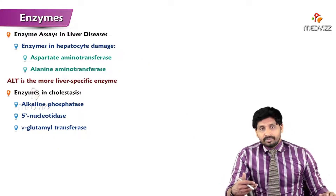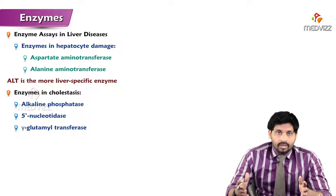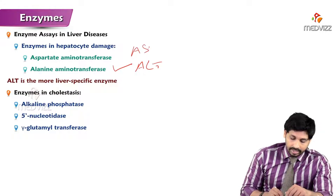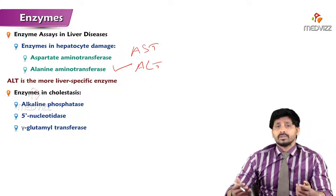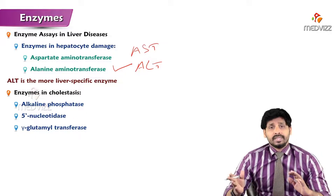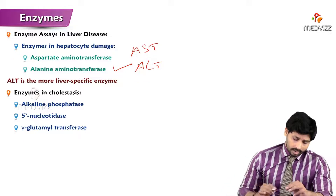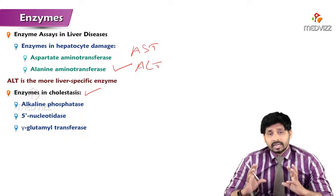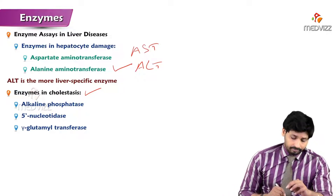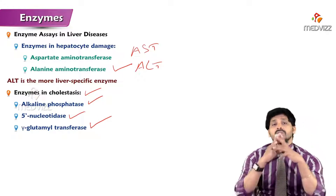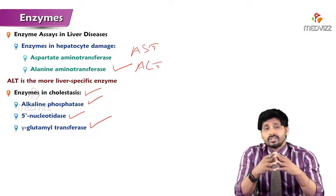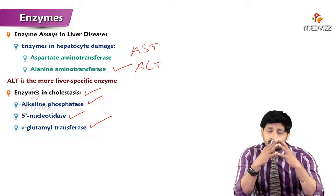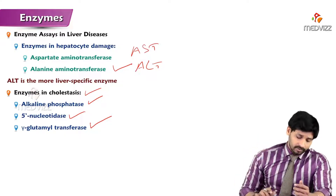For another organ — liver diseases — the main enzyme analyzed is ALT (alanine transaminase), and the second is AST. AST is present in liver as well as in heart, so apart from myocardial diseases, aspartate transaminase can be used for diagnostic purposes in liver diseases. Enzymes mainly involved in cholestasis — obstruction of the gallbladder — are alkaline phosphatase, 5'-nucleotidase, and gamma-glutamyl transferase. Elevation of these indicates blockage in the liver and gallbladder opening, so contents are not coming out of the liver.